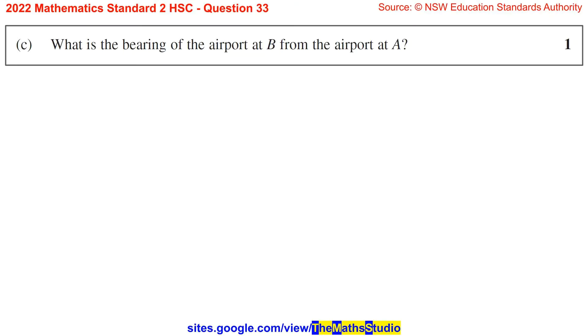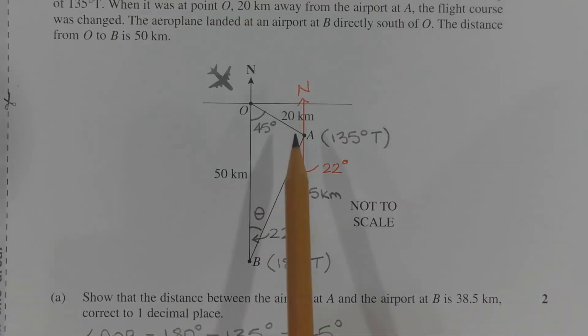Part C. What is the bearing of the airport at B from the airport at A? Draw a north-south axis through the airport at A. All north-south axes are parallel to each other since they're pointing in the same direction. So we have a pair of parallel lines and the transversal is AB. Now this angle here, this angle theta and this angle here are alternate to each other, which means they are equal.